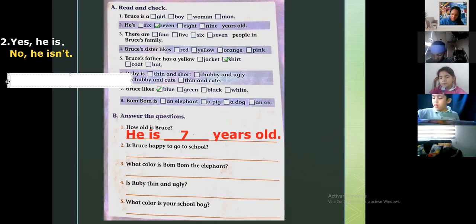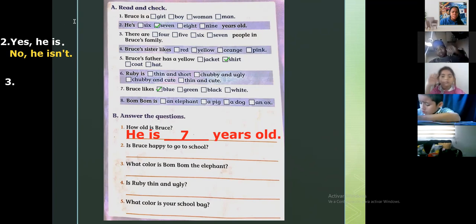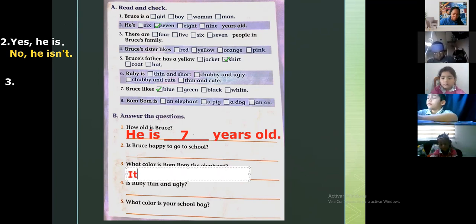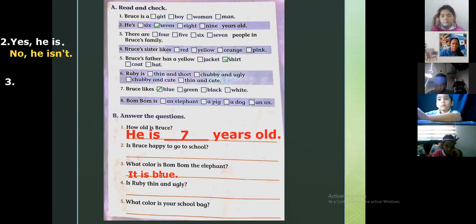Let's continue number three. What color is Boom Boom the elephant? De qué color es Boom Boom el elefante? Bueno todos sabemos el color de Bruce. I'm gonna write here, it is blue. Ahí tienen la respuesta de la número tres, o sea que no tienen que escoger.